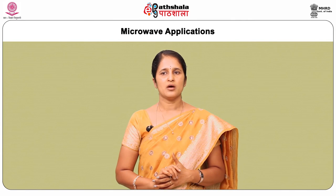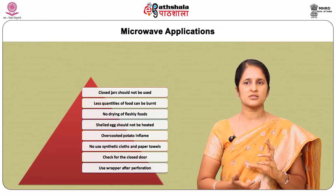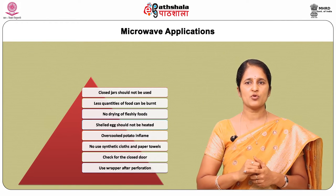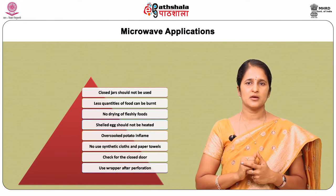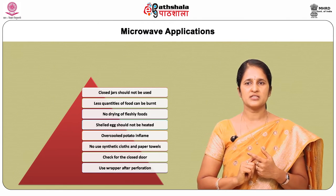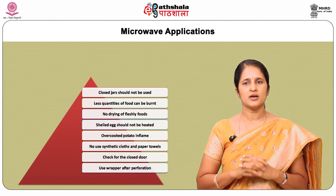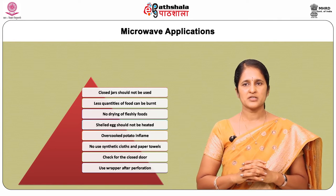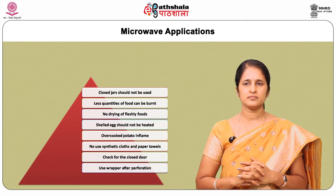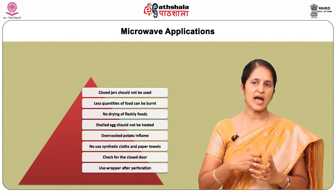Practical hints to be followed when using a microwave: closed jars should not be used as they may explode due to excessive pressure built up inside. Less quantities of food can burn out due to little moisture content. Meat, herbs, vegetables, and fruits should not be dried in the microwave. Eggs should not be heated with the shell because they may burst due to excessive pressure. Overcooking of potatoes tends to catch fire after drying. Paper towels or cloths with synthetic fiber should not be used as they may ignite. Check that the microwave oven door is closed properly, and if a wrapper is used, use only after perforating it.